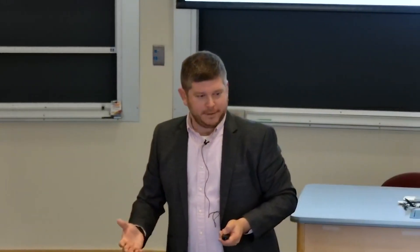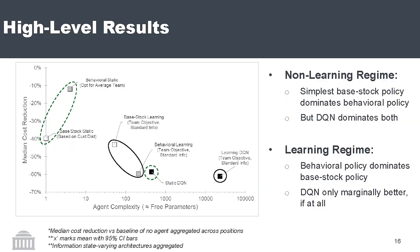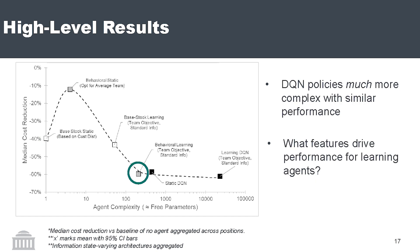So what do we get? This is a simplified version of the results, but I want to draw your attention to two things. In the static policy region where we don't learn, the base stock agent dominates on the simple side, and yet our complex neural net still does a pretty good job. The moment we can learn, though, suddenly our behavioral agent starts doing a lot better, and our neural net moves off to the side. And you get this lovely shape where a relatively simple policy that learns and updates is achieving similar results to our incredibly complex, exotic neural net method.